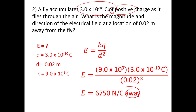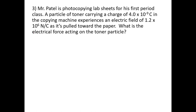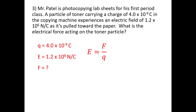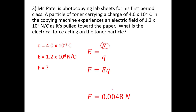The direction that a positive charge would travel is what we commonly state as the electrical field direction. In this next problem, we have a charge and are given an electrical field and asked for force — that gets you back to E = F/q. Solving for F: multiply both sides by q, so F = Eq. Plugging in the values, you get 0.0048 newtons.